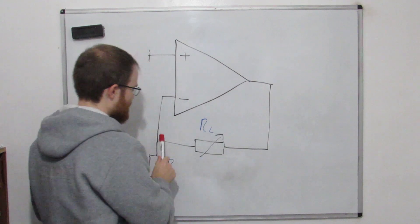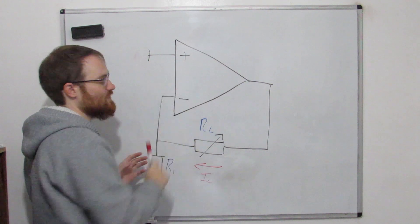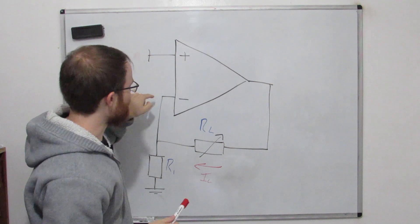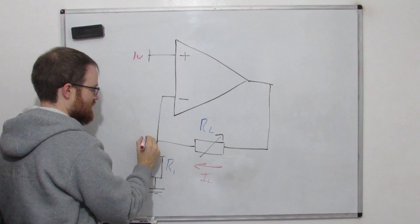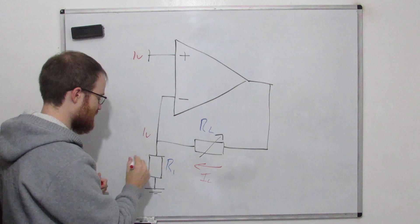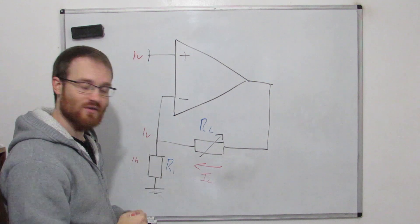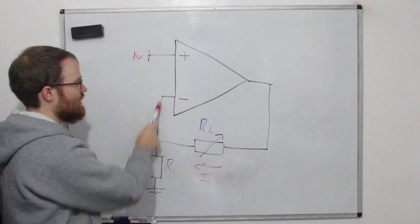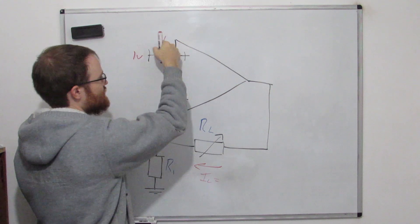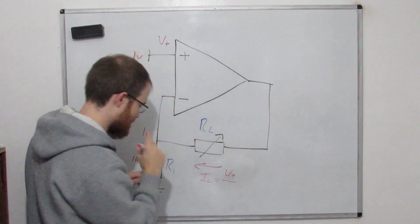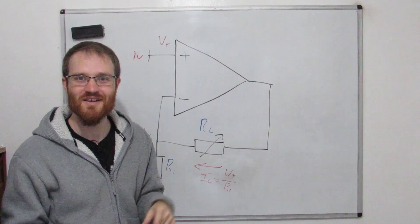We can make a really straightforward op amp current source by connecting the load between the output and the inverting input. From our golden rules, no current flows in or out of the inverting input, and the op amp will make both inputs the same due to negative feedback. If we put 1V on the non-inverting input, there's 1V across R1. With R1 = 1kΩ, that gives us 1 milliamp. These two are in series and no current flows into the input, so the current is simply V+ divided by R1 — completely independent of the load resistor, with no VBE drops.